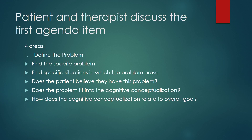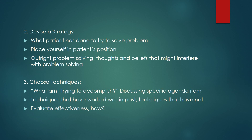The patient and therapist then discuss the first agenda item. There are four areas to consider. First, define the problem: find the specific problem and situations in which it arose, determine whether the patient believes they have the problem and that it affects them, assess whether it fits the cognitive conceptualization, and identify the patient's goals. Second, devise a strategy with the patient: what has the patient done to try to solve the problem? The therapist should place themselves in the patient's position, consider outright problem solving, and examine thoughts and beliefs that might interfere with problem solving.